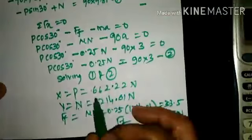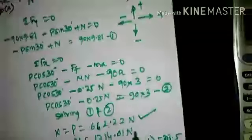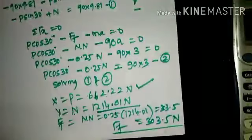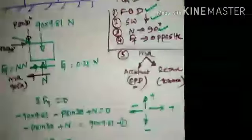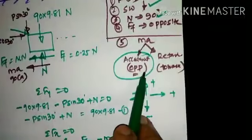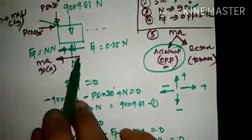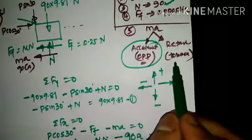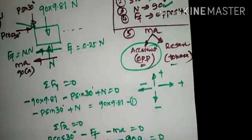So the magnitude of force P is 662.22 N, which is required to induce an acceleration of 3 m/s². The normal reaction is 1214.01 N. This is how we solve a kinetics problem when a block is subjected to acceleration. In the case of acceleration, the inertia force is always opposite to the motion of the body; in retardation, it is along the direction of motion. Thank you, have a nice day.